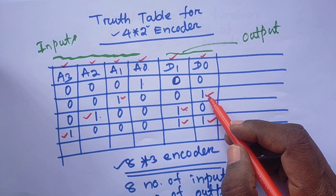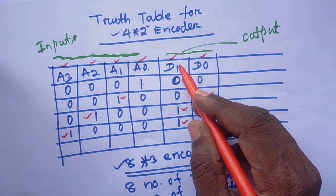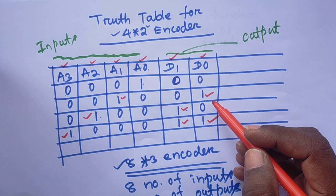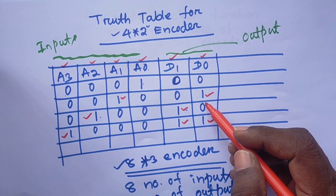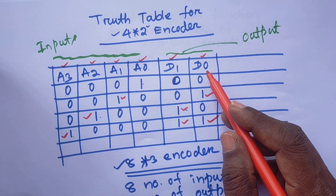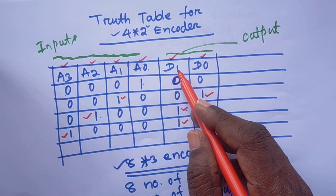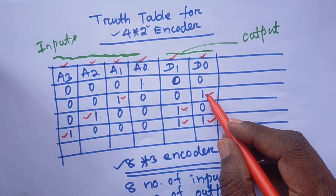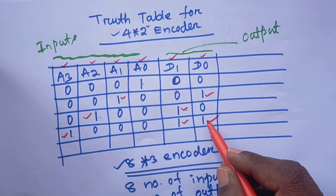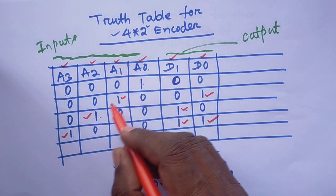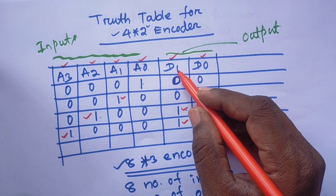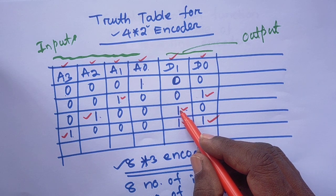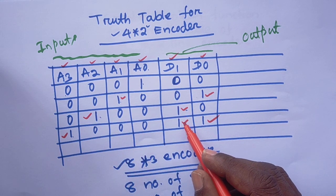So now we can understand how to define the Boolean function for d0 and d1. We have to check what the value 1 is for d0 and d1 — don't consider value 0, only consider value 1. So now we will design the Boolean function for d0 and d1. d0 is obtained from a1 and a3. Similarly, d1 is obtained from a2 and a3.